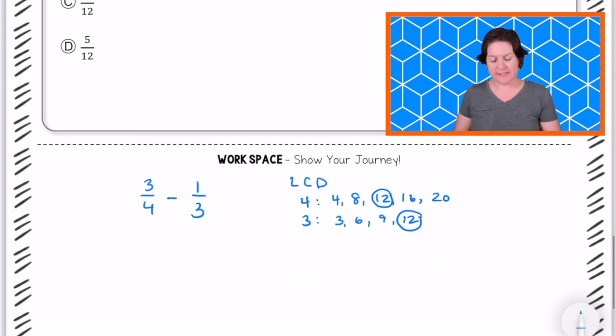So my next step would be to rewrite these equivalent fractions. So yes, we're changing 3/4 into a fraction with a denominator of 12, but it's an equivalent fraction. So let's see how we got there. If we multiply 4 times 3, that gives us 12. Same on the bottom, same on the top. 3 times 3 equals what? 9.